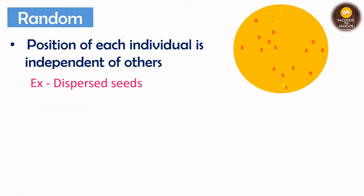The second type of dispersion is random dispersion. As the name suggests, the position of each individual is independent of others — it is not related to other individuals of that population and is randomly distributed. In the case of dispersed seeds that are dispersed by wind or water, this type of dispersion is shown.